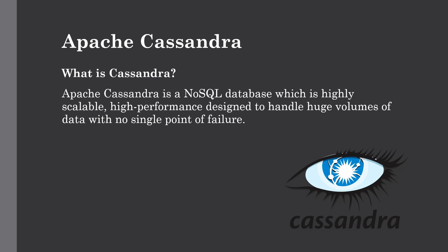Cassandra doesn't have any master server or master node to handle all administrative work, which is the reason it doesn't have any single point of failure. HBase has an HMaster server which handles tasks such as which regions are placed on which region servers, which nodes are available, and all load balancing tasks. But in Cassandra there is no such master server, which makes it a very highly available database.